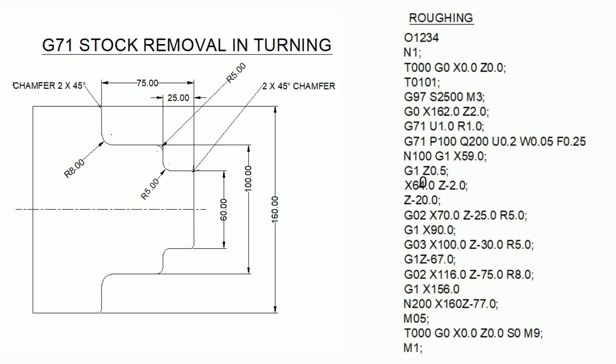Then G1 Z-67 — the second step length is 75, but I give 67 because the radius is 8, so 75 minus 8 equals 67. Then G02 — clockwise circular interpolation — X116 Z-75 R8. X116 because the diameter is 100 and radius 8 times 2 is 16, so 100 plus 16 equals 116. Z-75. Then G1 X156 — the major diameter is 160, minus 4mm for the 2mm chamfer — then X160 Z-77 for the chamfer.